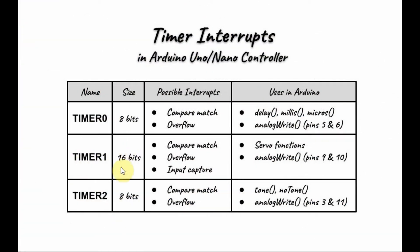Timer 1 has a size of 16 bits, and it can generate a compare match interrupt, overflow interrupt, and input capture interrupt. The input capture interrupt enables Timer 1 to capture a time value from an input pin in order to measure the frequency of an input signal. Functions related to Timer 1 include the servo functions and analogWrite for pins 9 and 10.